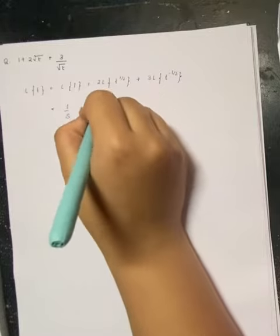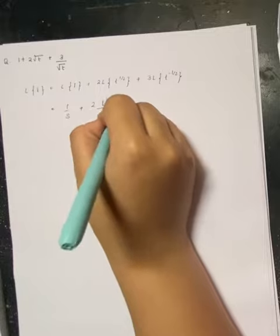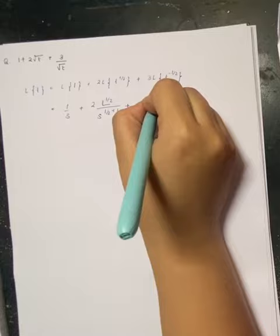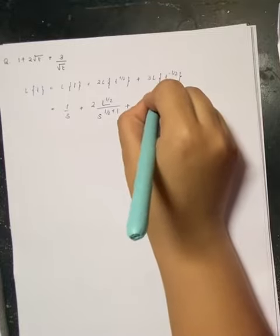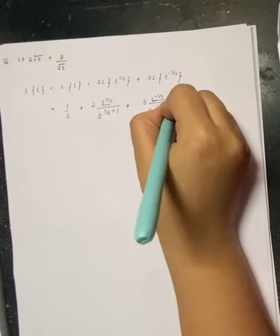will be equal to gamma of 1 by 2 by s to the power 1 by 2 plus 1, plus 3 into t to the power n again by s to the power 1 by 2 plus 1.